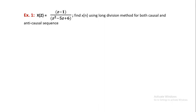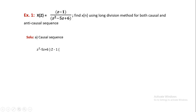To understand causal and anti-causal, first let us consider the causal sequence. For a causal sequence, the division has to be considered in such a way that you always start the first term with the higher polynomial value. That is z² - 5z + 6, where the higher polynomial value is z². In the numerator, z is the higher polynomial value, so we start with that. Let me proceed with the division process.